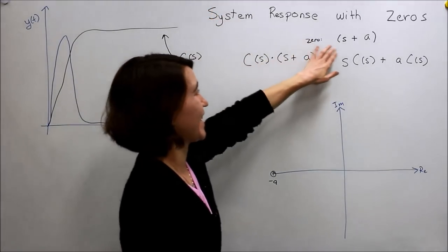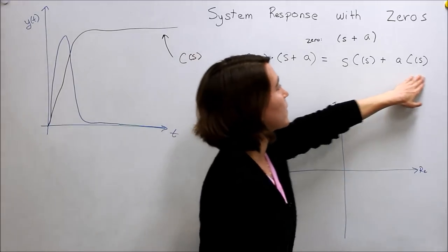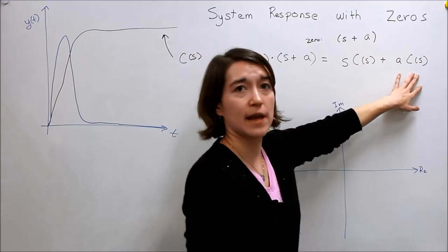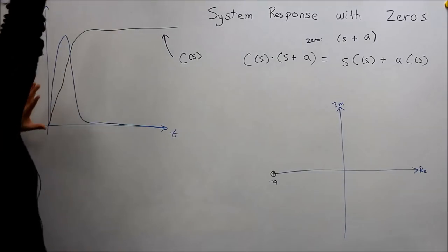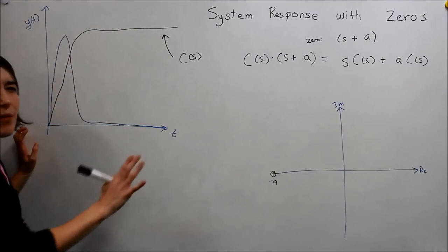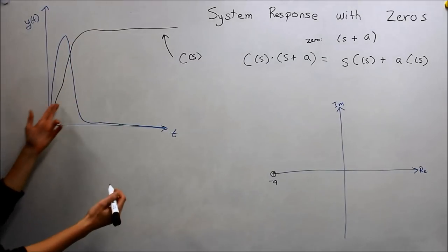So this would dominate. So you would pretty much get the same C(s). And this thing, so this would be scaled up very large. And then this would be a very small effect on it. So you'd essentially get the same response.